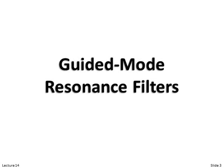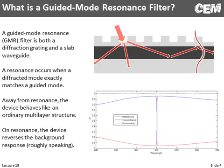In a Guided Mode Resonance Filter, there are two things happening at the same time: diffraction and waveguiding. We have an incoming wave that sees a grating, so it diffracts into multiple directions. We also have a high-index region surrounded by two low-index regions, so this is a slab waveguide.